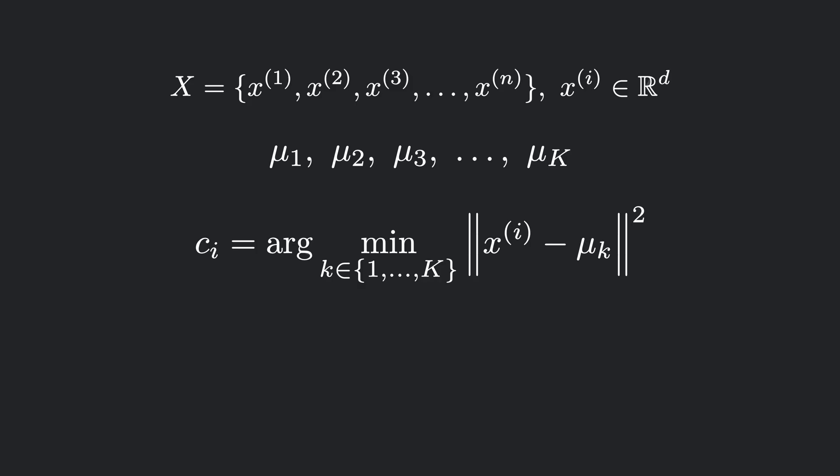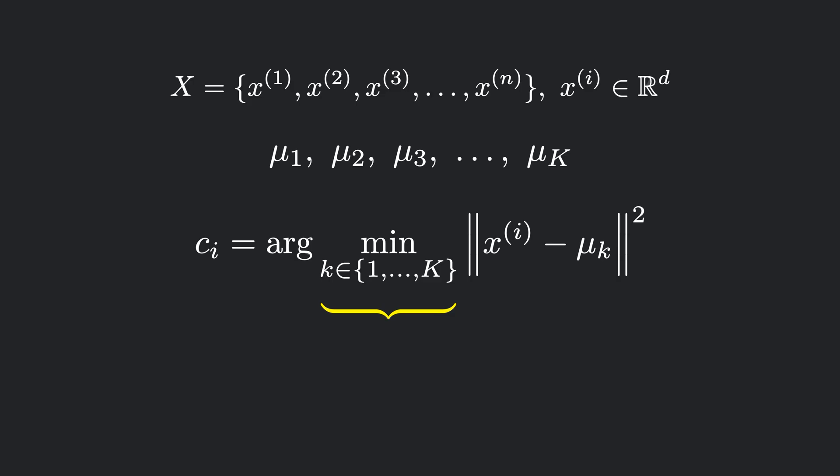The first step is the assignment step. For each data point, we calculate its distance to every centroid. Instead of just taking the raw distance, we actually square it. This is done purely for mathematical convenience, since squaring does not change which centroid is the closest, but it makes the math simpler to work with. After computing the squared distances to all k centroids, we pick the smallest one and assign that data point to the corresponding cluster.